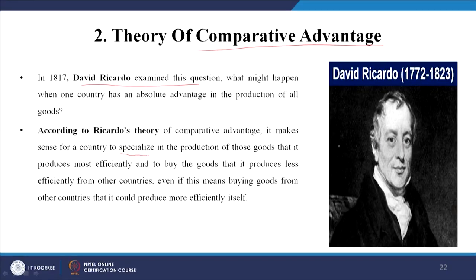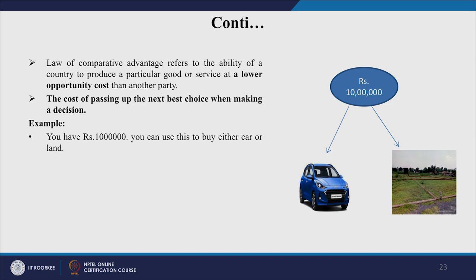Ricardo's comparative advantage theory states it makes sense for a country to specialize in the production of those goods it produces most efficiently, and to buy goods it produces less efficiently from other countries — even if this means buying goods from other countries that it could produce more efficiently itself. For example, if India produces products A and B and is better than China in both, India should still specialize in A and get B from China. The law of comparative advantage refers to the ability to produce a good at a lower opportunity cost than another party.